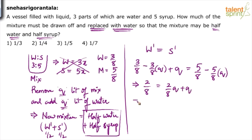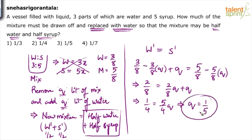So 1/4 equals (5/4)q, which means q equals 1/5. Basically, one-fifth of the quantity must be removed — one-fifth of the quantity was removed, which is option 3.